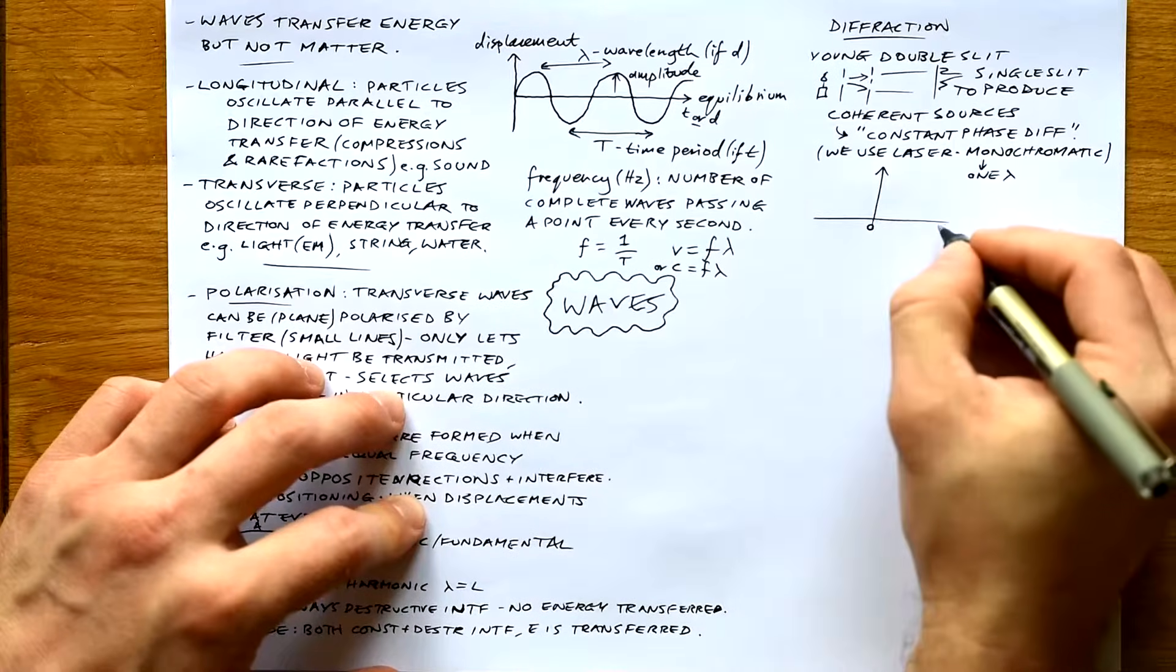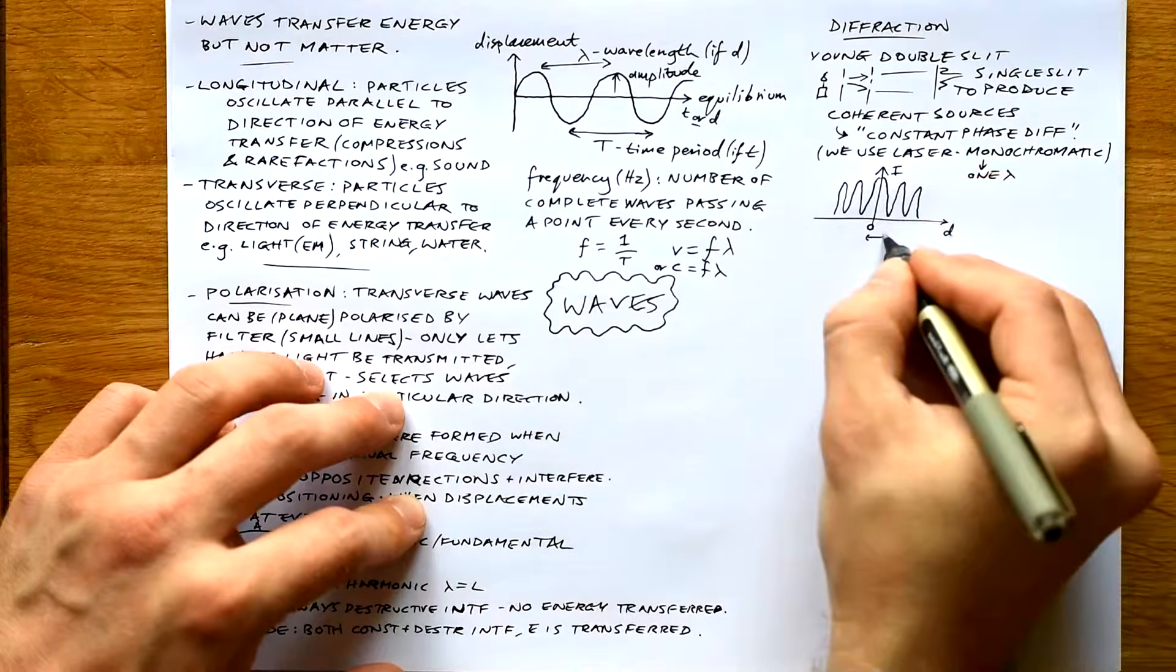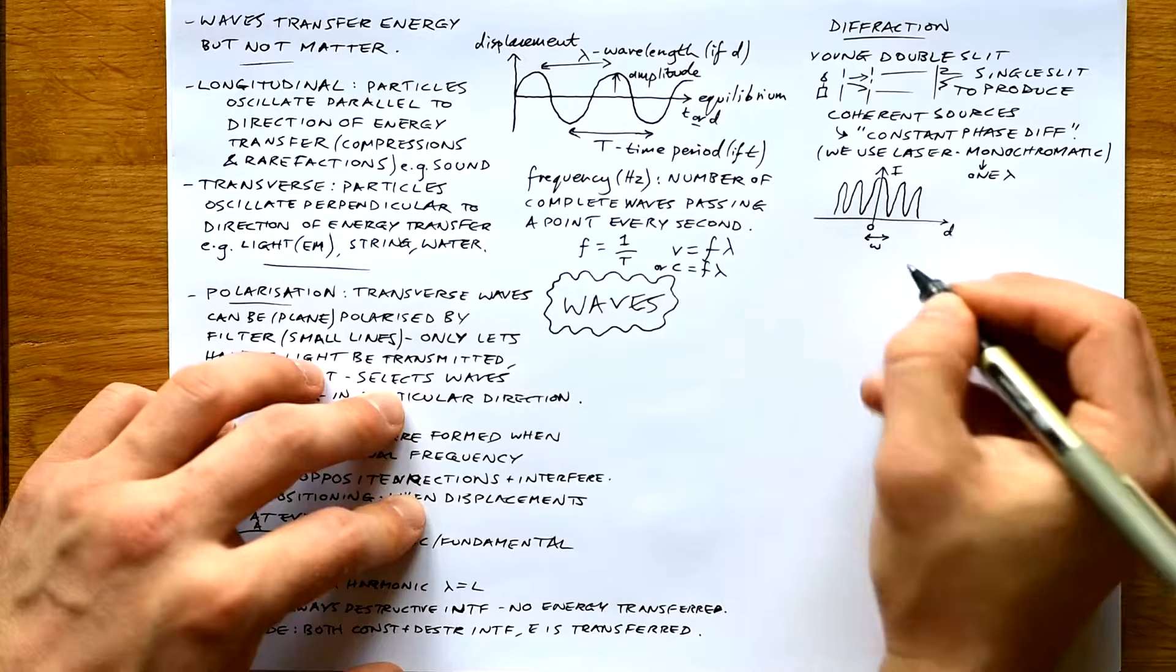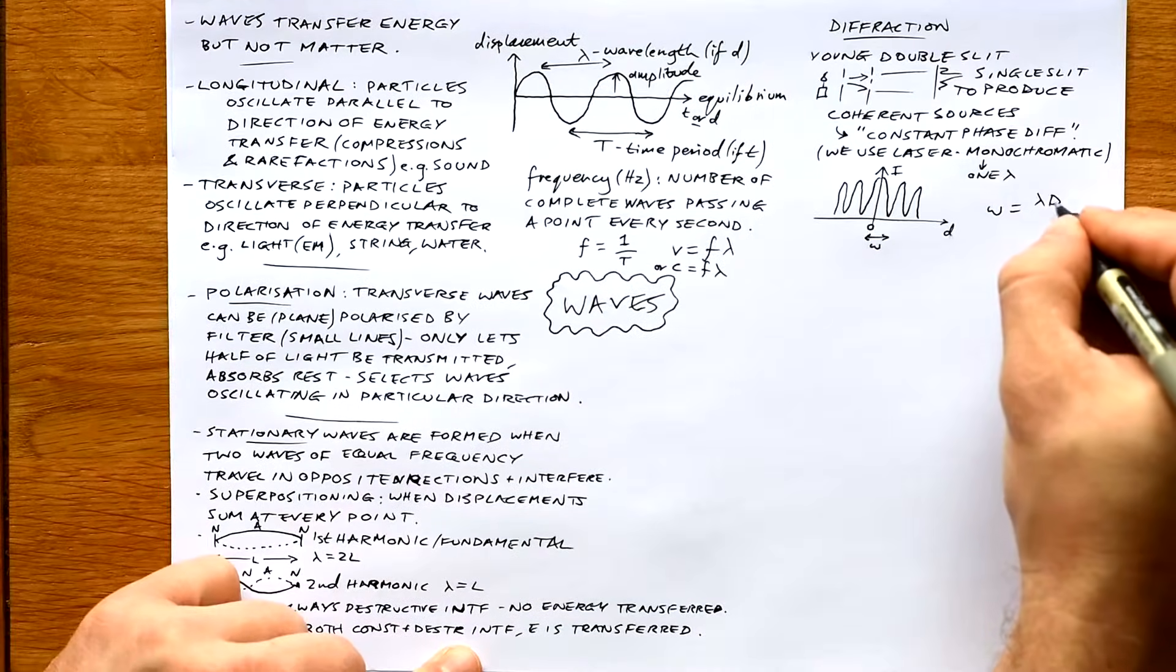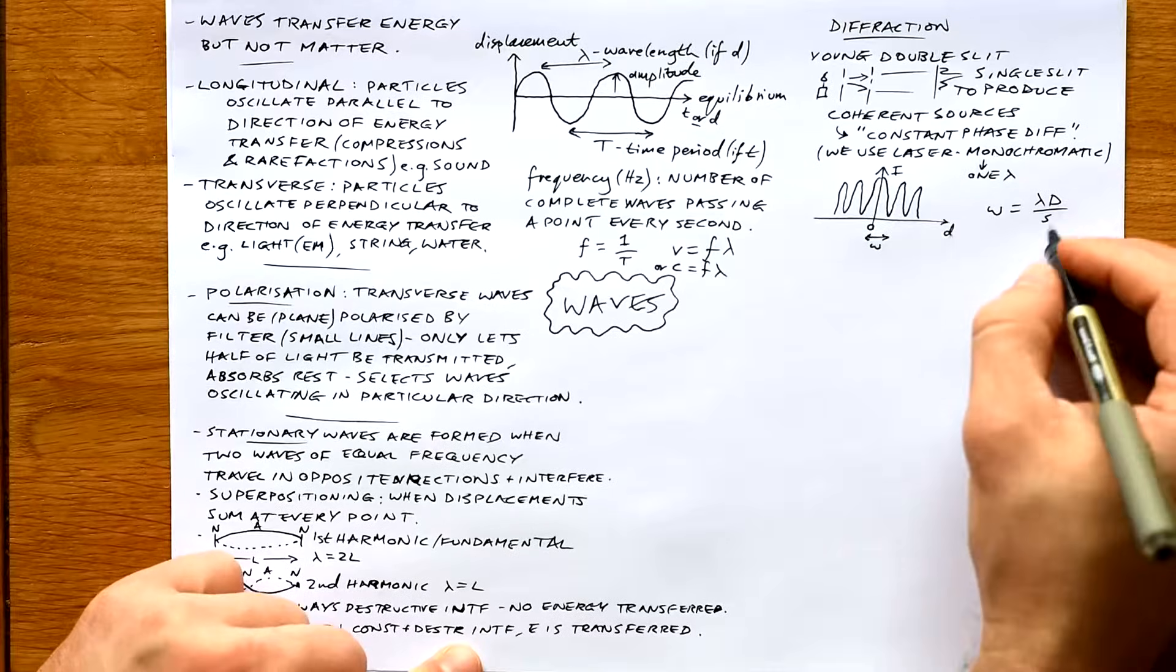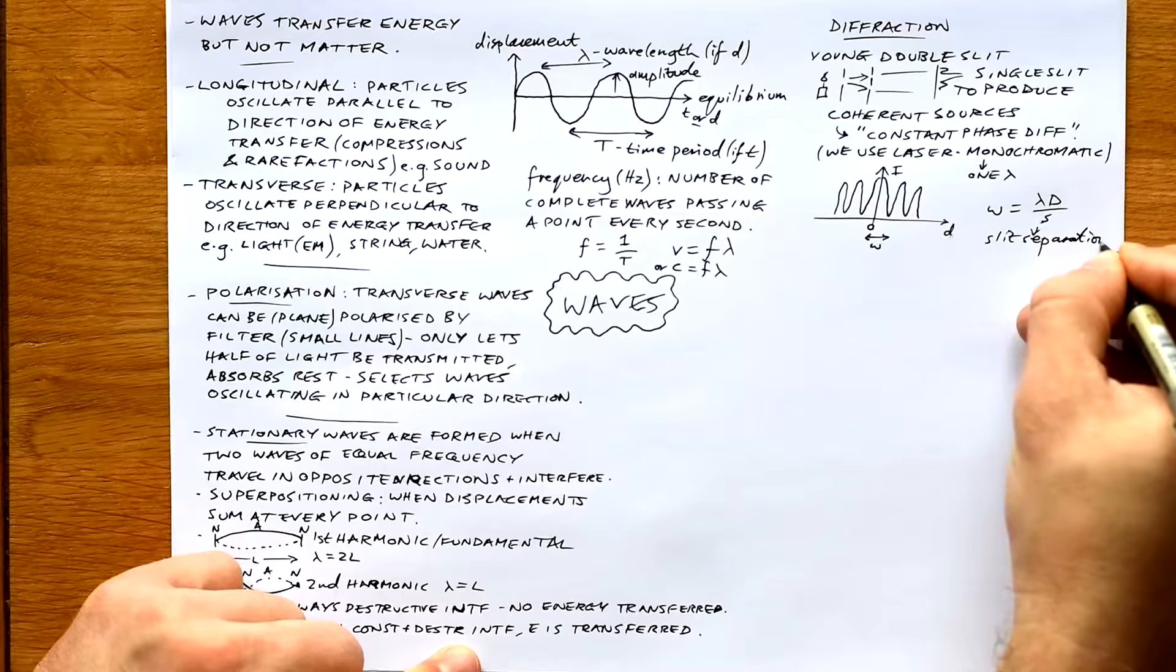So if we draw a graph of what's going on: here's our intensity, here's our distance from the center. Fringe width or fringe spacing is given the letter w, and the Young's double slit equation is w equals lambda d over s. s is the slit separation, that's the double slit, the spacing between the two slits there.